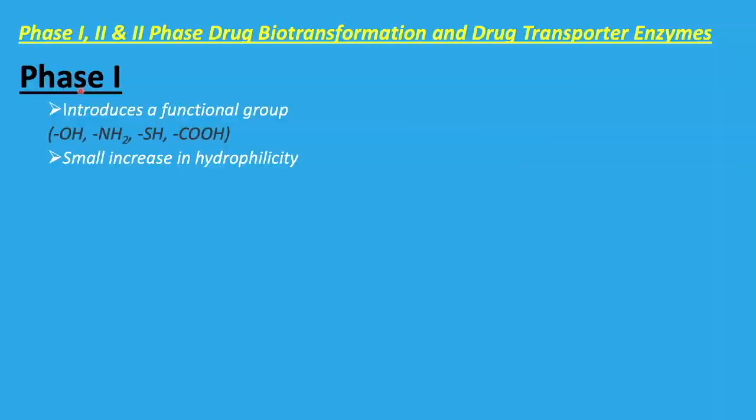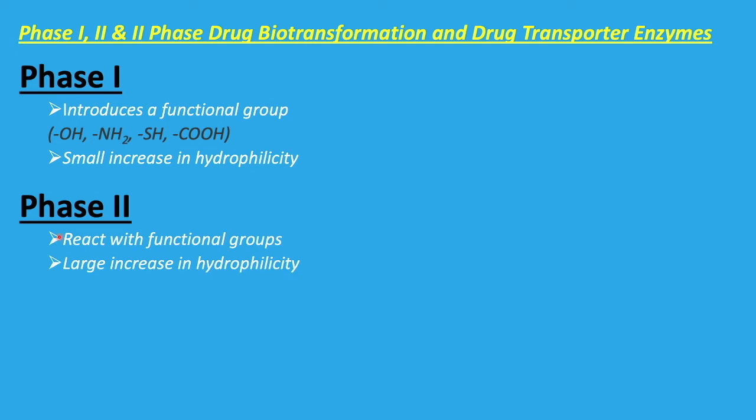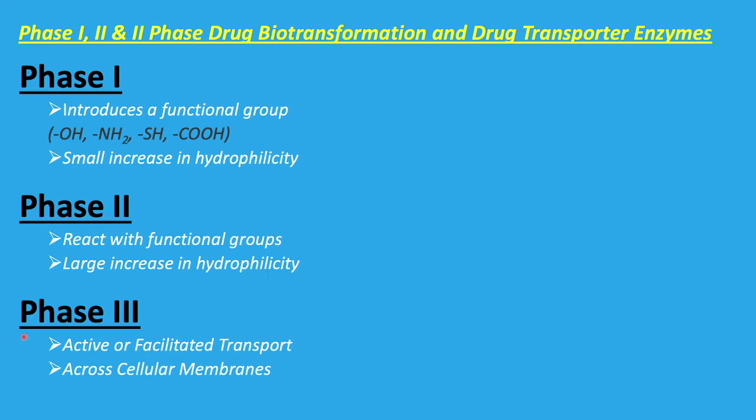In phase 1 reactions, there is an introduction of a functional group including hydroxyl, amidation, sulfhydryl, and carboxylation. It produces a small increase in hydrophilicity, whereas phase 2 reactions produce a rather large increase in hydrophilicity. Phase 3 reactions are comprised of active or facilitated transport by drug-transporter proteins across cellular membranes — that's how much of the pharmacotherapy you prescribe gets across cellular membranes.